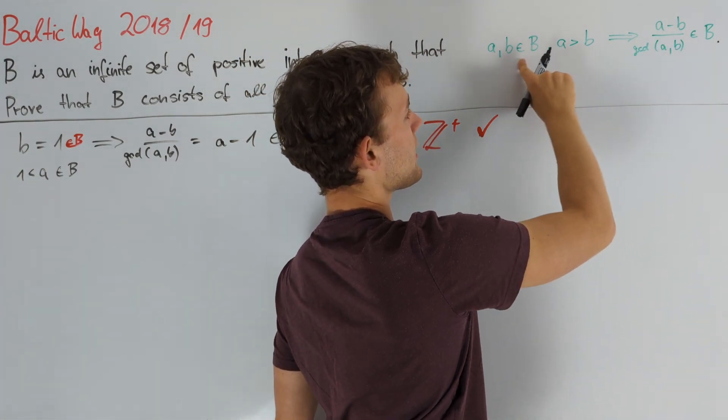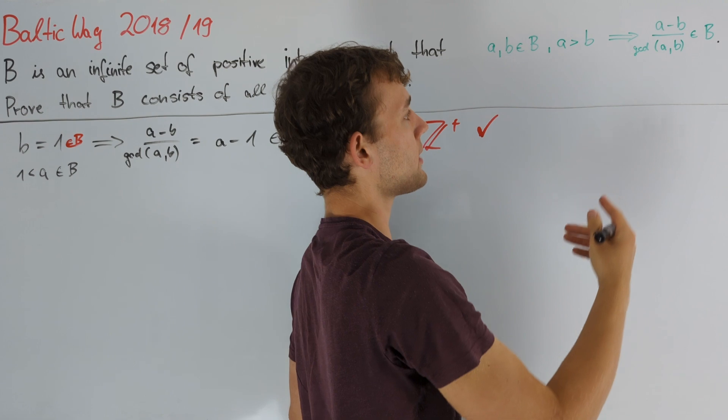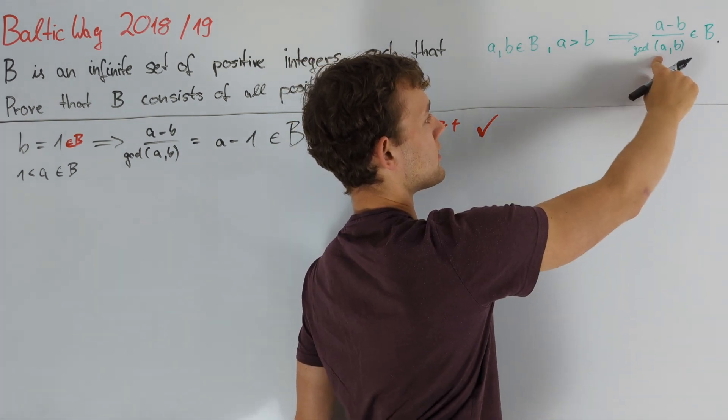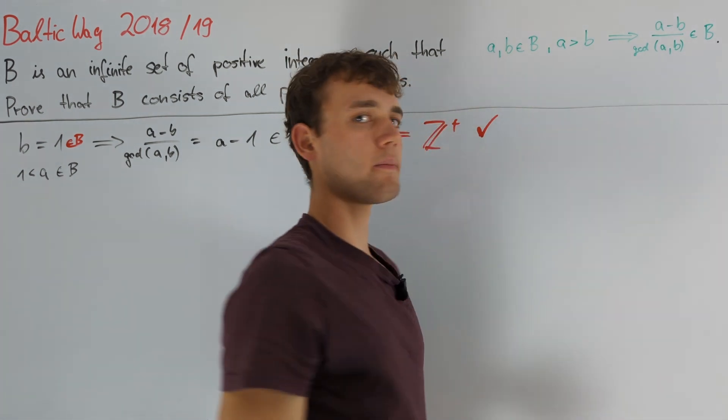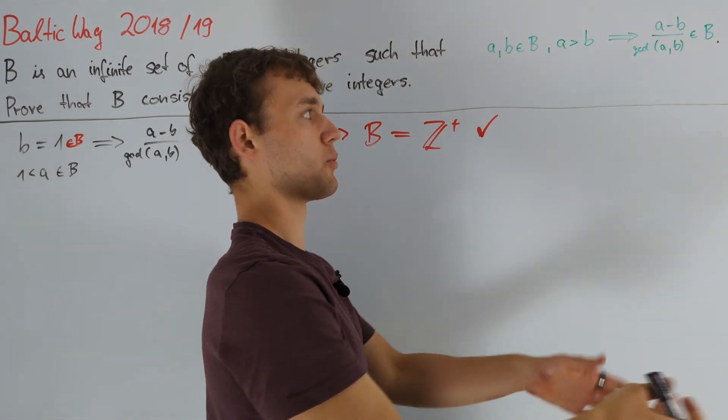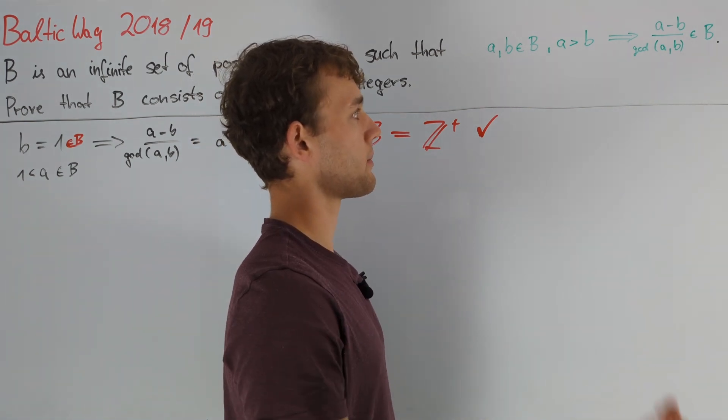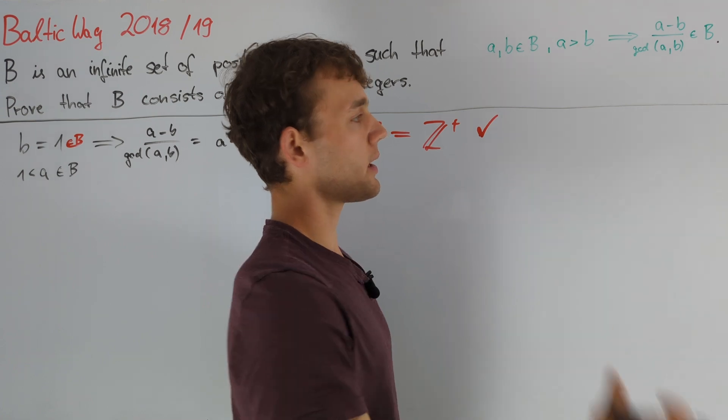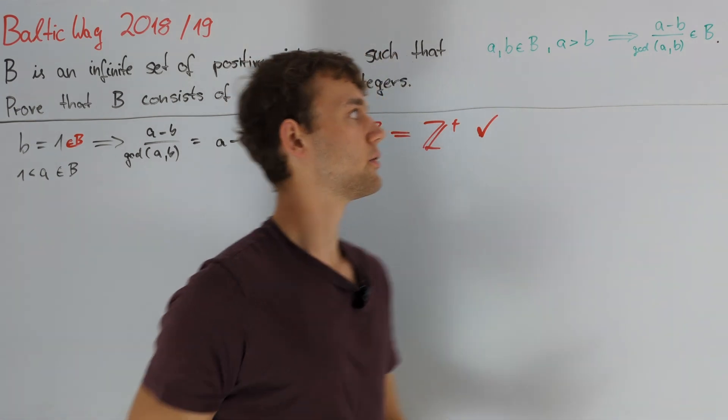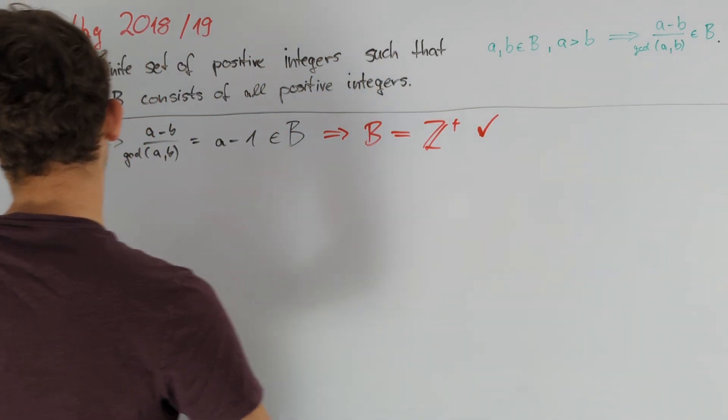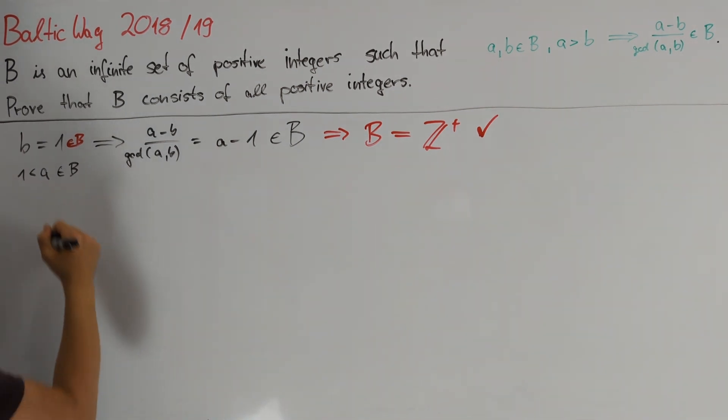If we could also prove that this is less than b, then from a and b in B, we would always get a smaller number that is contained in B, and then by infinite descent, we would have proven that 1 is in B. This is obviously not quite true. We can make up a counterexample, but this idea motivates us to use infinite descent to prove that 1 is in B.